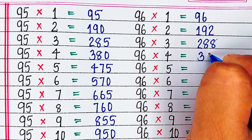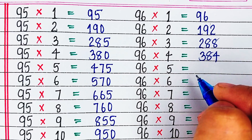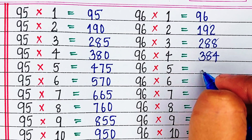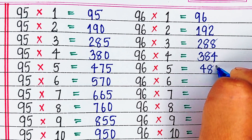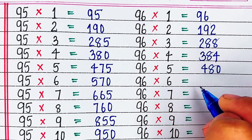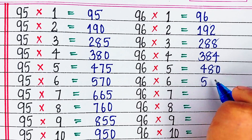95 threes are 285. 96 fours are 384. 96 fives are 480.